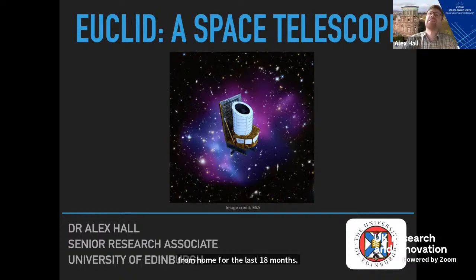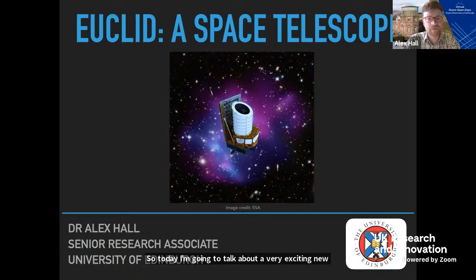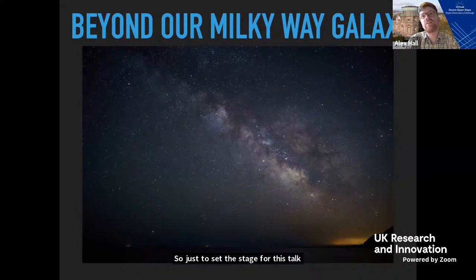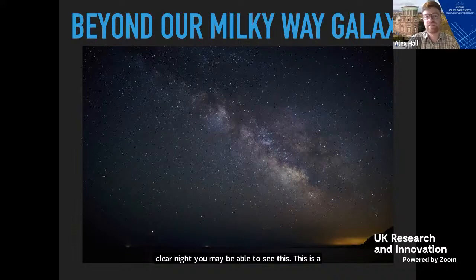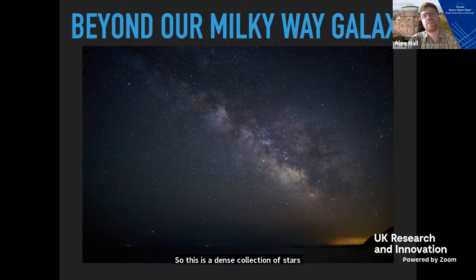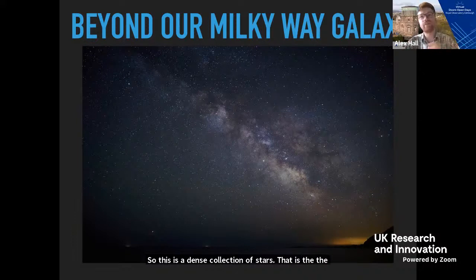Today I'm going to talk about a very exciting new space telescope called Euclid that myself and many others at the observatory are working very hard on. Just to set the stage: on a very clear night, you may be able to see our Milky Way galaxy — which our previous speaker has talked about in great detail — as a dense collection of stars. The Milky Way is a disk-like structure and the solar system is sitting in this disk.